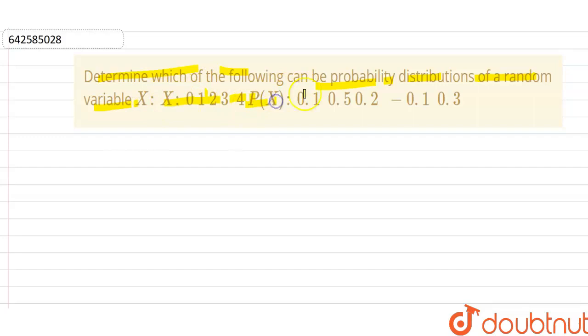their probabilities are 0.1, 0.5, 0.2, minus 0.1, and 0.3. So first we write this in the tabular form here.